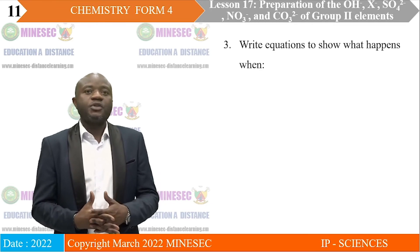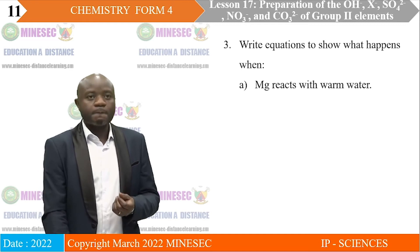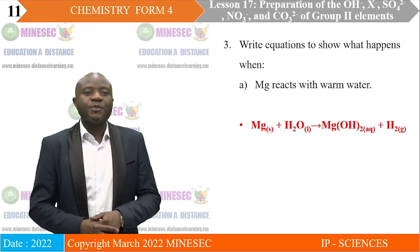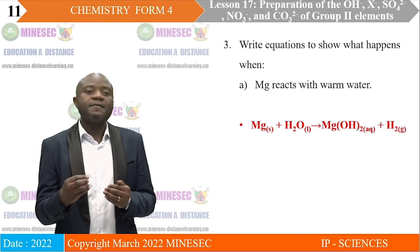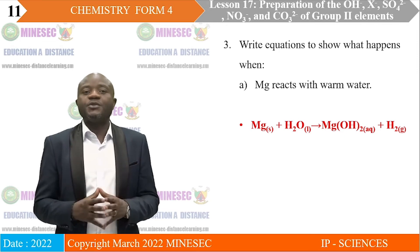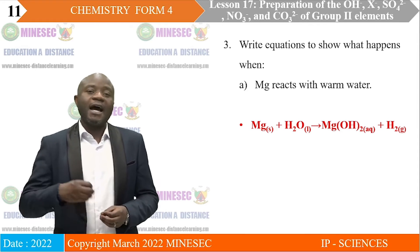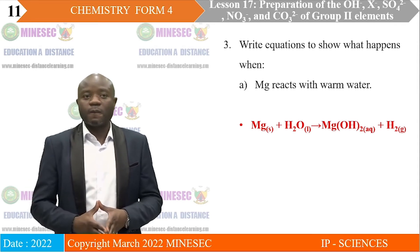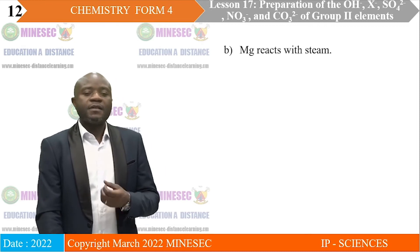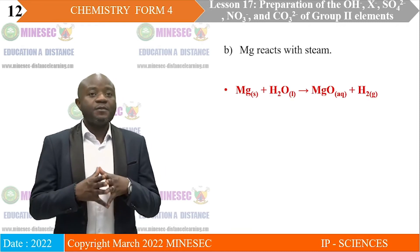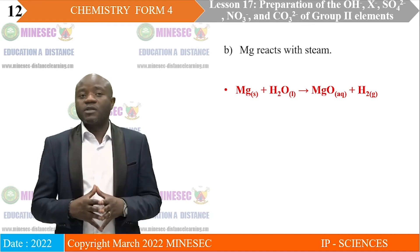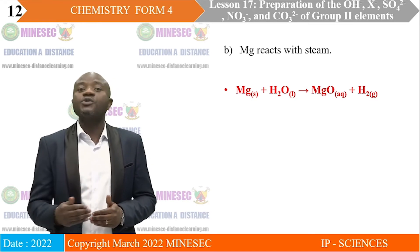Question 3. Write equations to show what happens when: A. Magnesium reacts with warm water. Magnesium is relatively unreactive compared to calcium, so when it reacts with warm water, magnesium hydroxide is produced and hydrogen gas is given off. B. When magnesium reacts with steam, the reaction is more vigorous, but this time magnesium oxide is produced instead of magnesium hydroxide, while hydrogen gas is also given off.